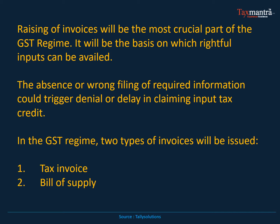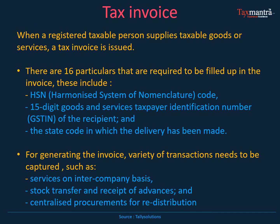There are two kinds of invoices which need to be raised under GST: one is a tax invoice, another is a bill of supply. A tax invoice is basically raised when a registered taxable person supplies taxable goods or services. When someone registered under GST is supplying goods or services, they would raise a tax invoice. There are 16 particulars that are required to be filled up in the invoice, which we will discuss in the next slide.